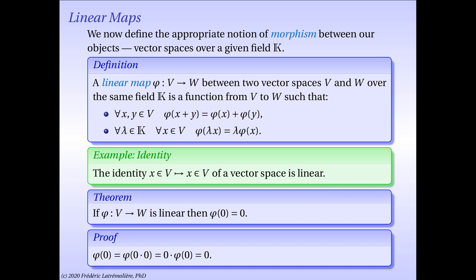Let us prove a simple but important property of linear maps. If phi is a linear map from V to W, then it must map the zero vector to the zero vector. Since phi is a group morphism from the additive group of V to the additive group of W, it must map the neutral element of V to the neutral element of W. But I am going to present here a proof that relies on the vector space structure to vary the pleasures a bit.